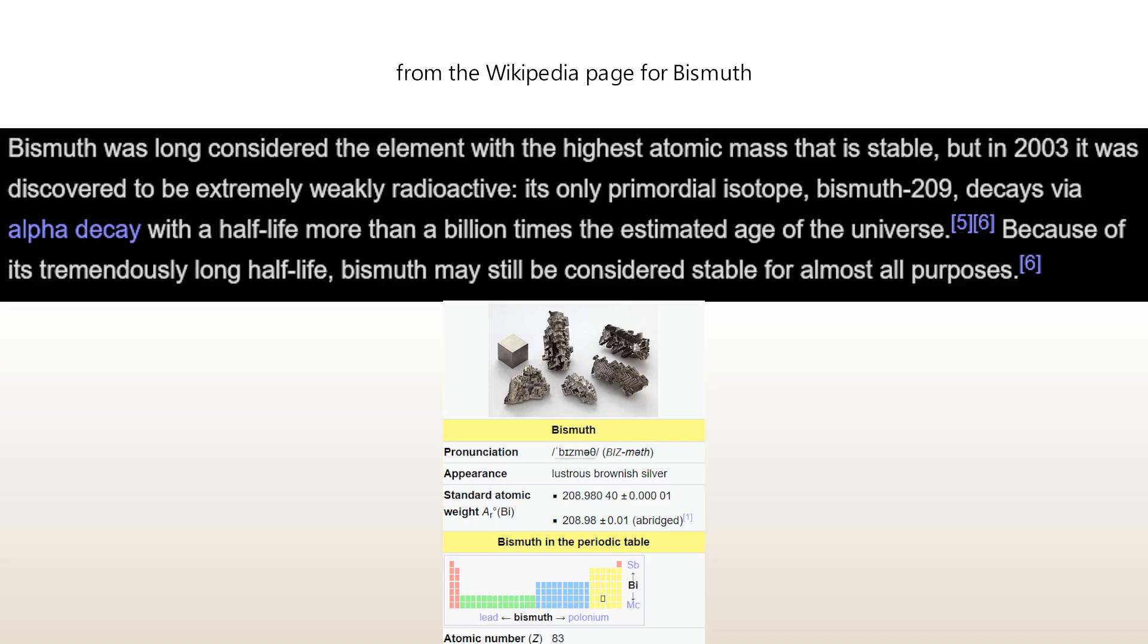With an atomic number of 83, bismuth is technically radioactive, but its half-life is longer than the age of the universe, so it's probably fine. It's really not dangerous at all to handle or have on you.